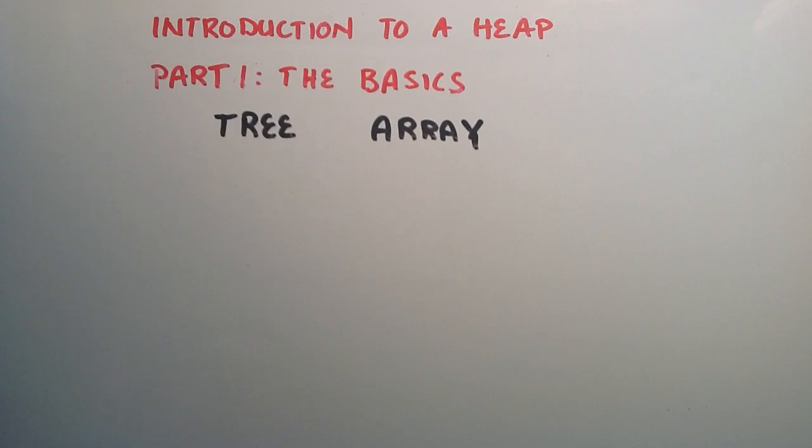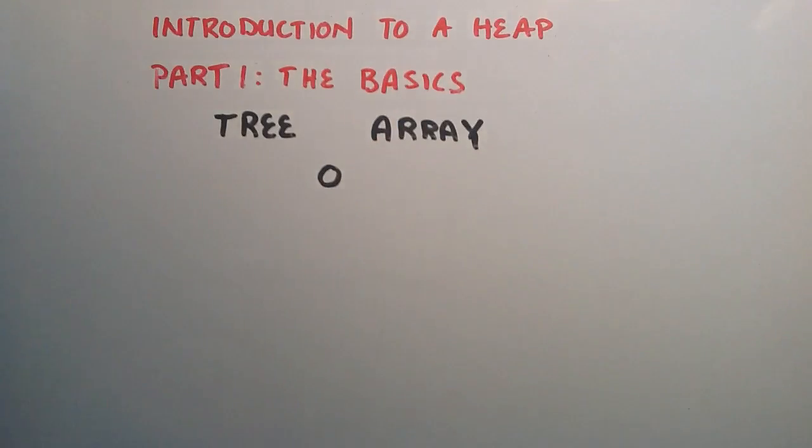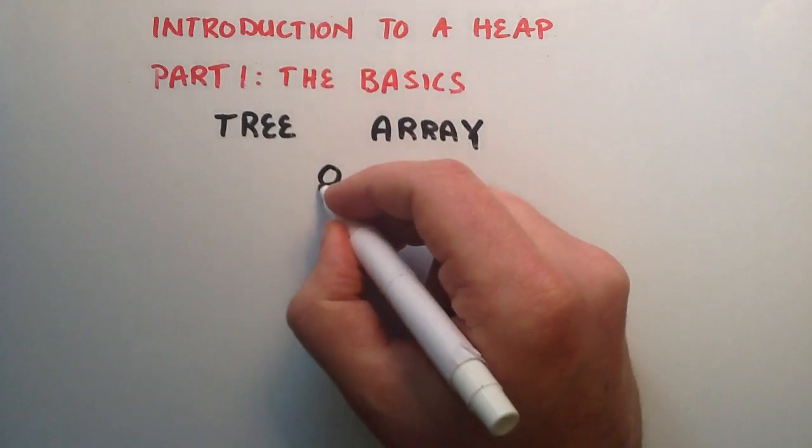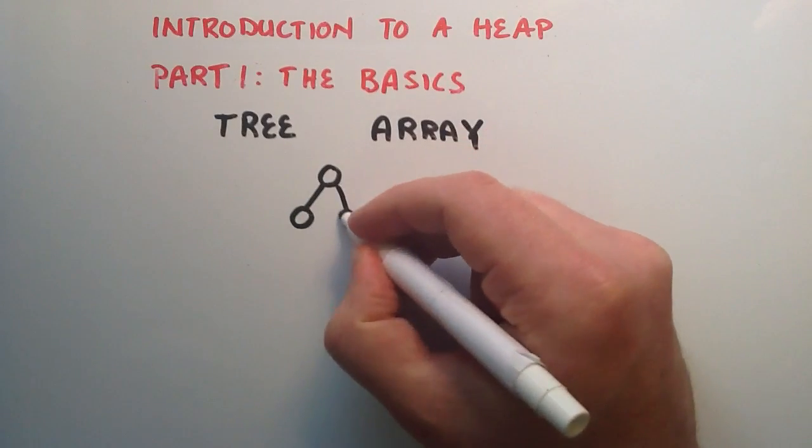And the way we start to build our heap is we simply start at the root node. So that's the beginning of our heap right there. And then we fill in our heap from top to bottom, left to right. So the next node would go to the left child, and the next one would be the right child.